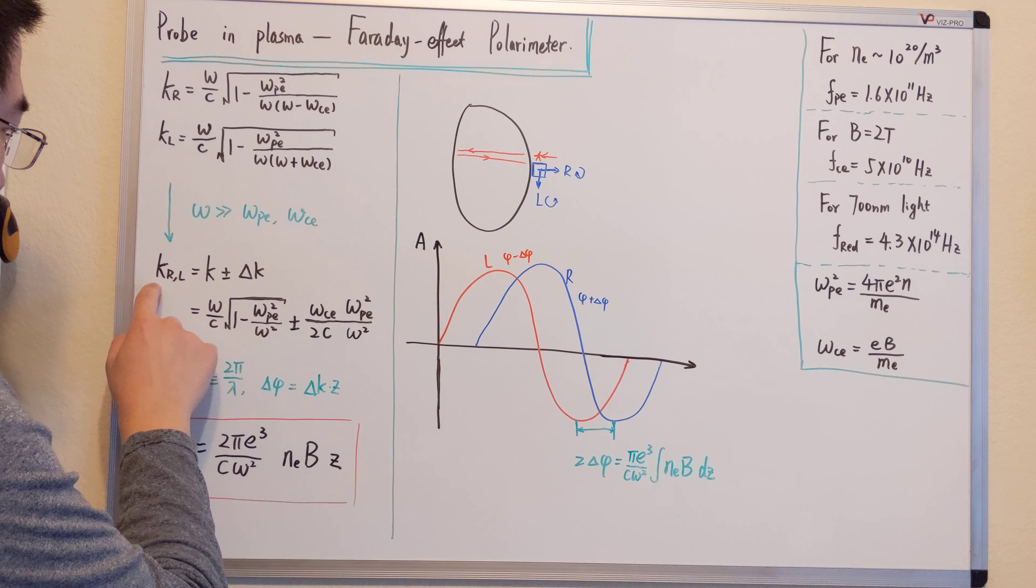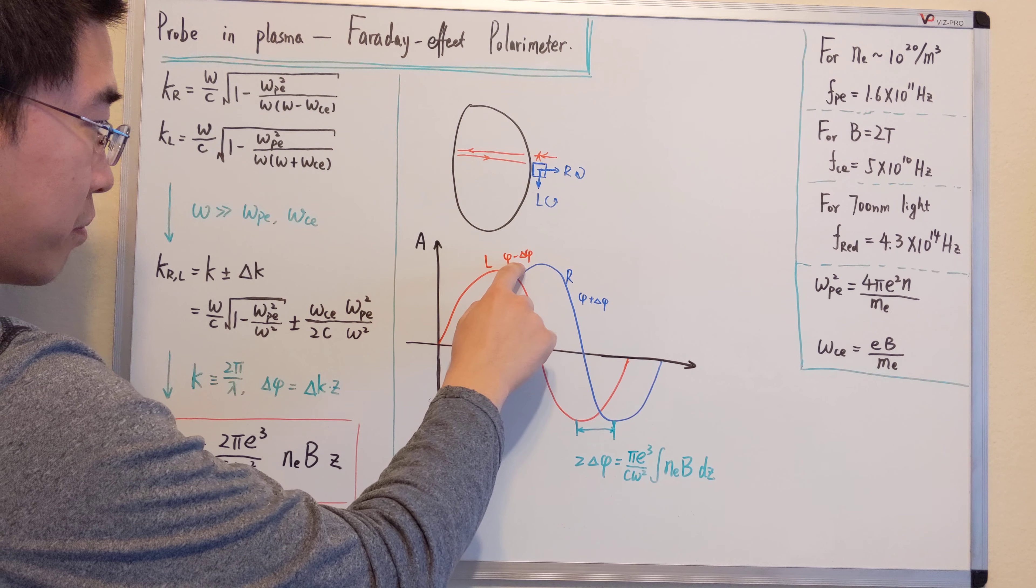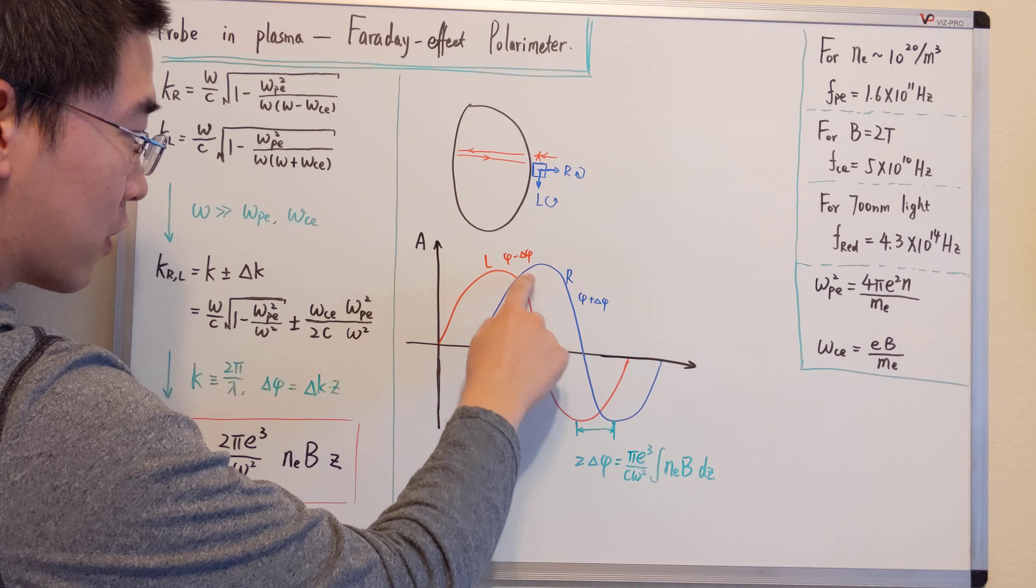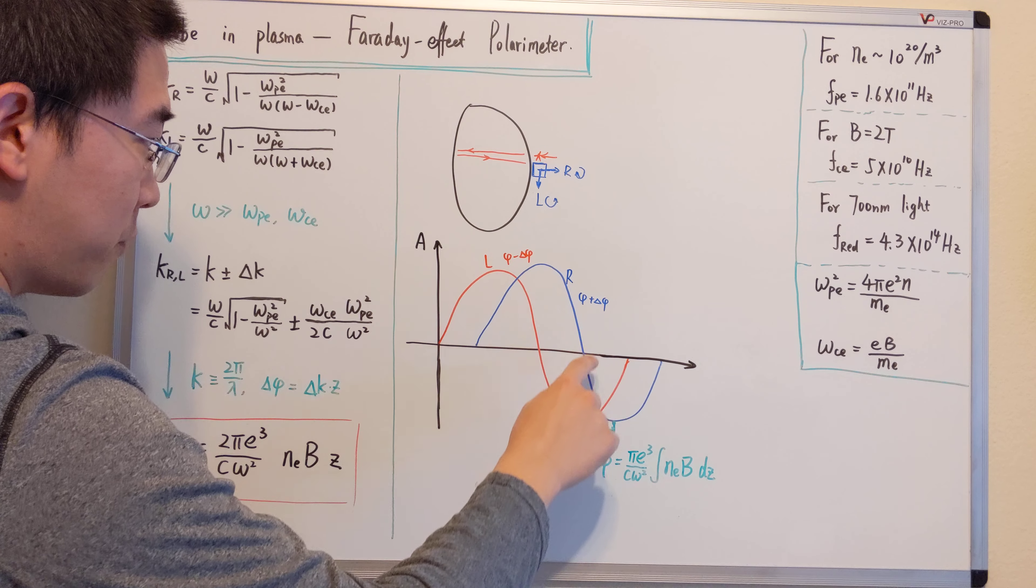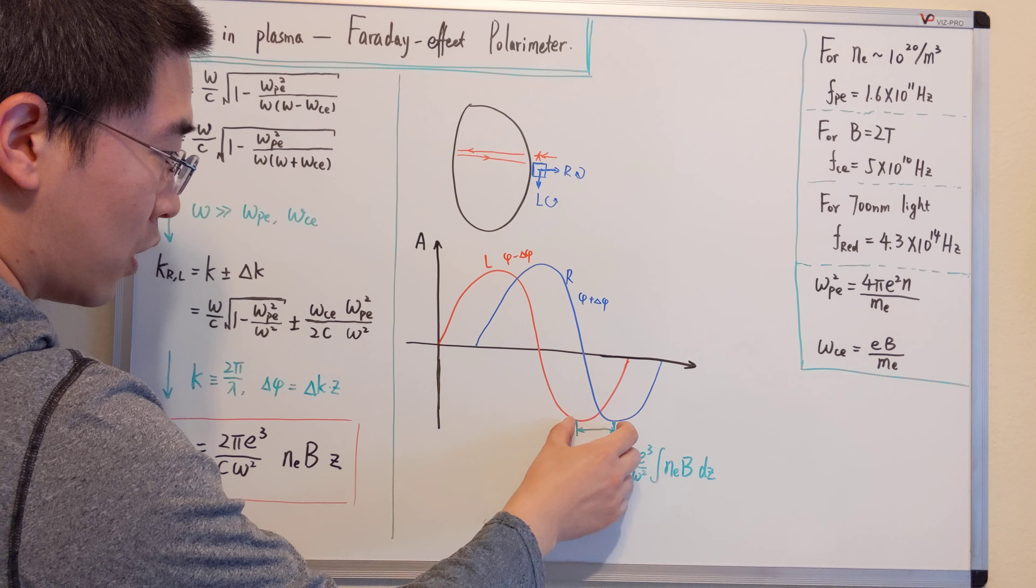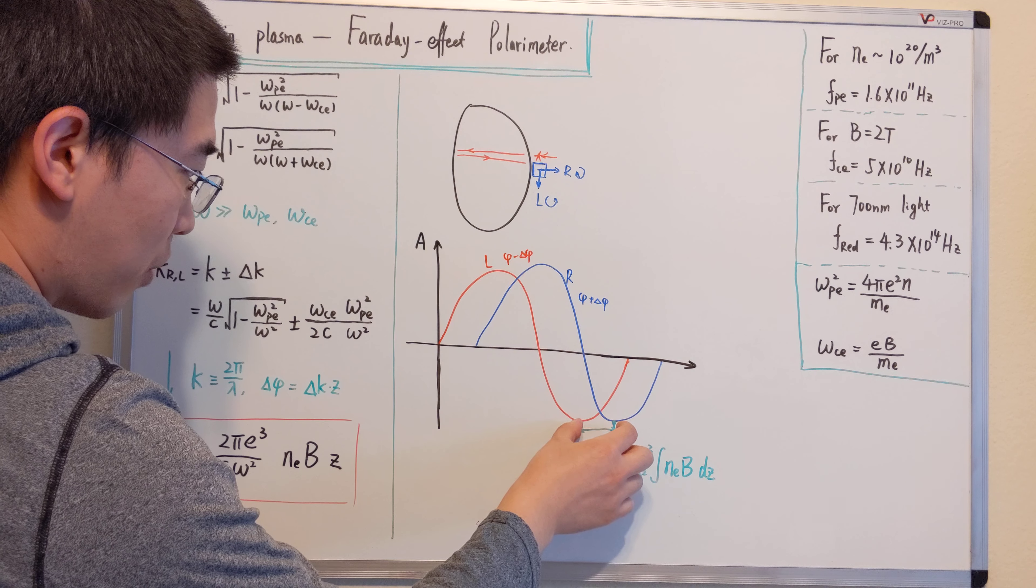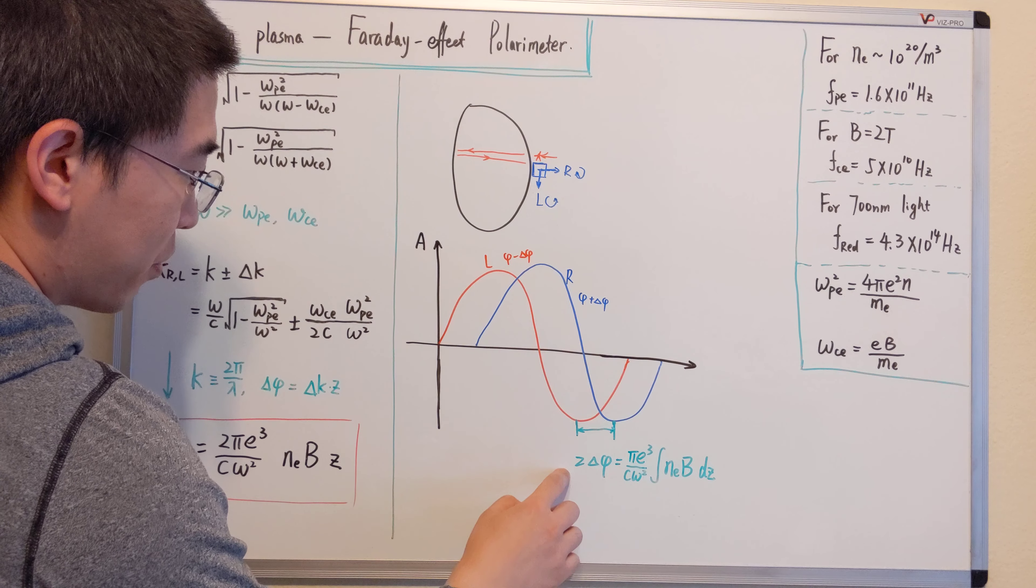Then we have this phi minus delta phi, this phi plus delta phi. So the phase difference between those two sine waves will be two delta phi.